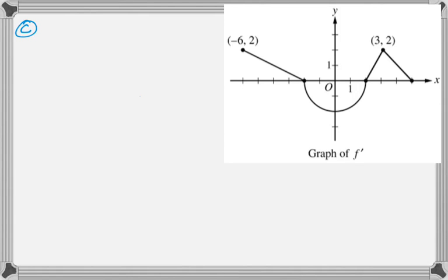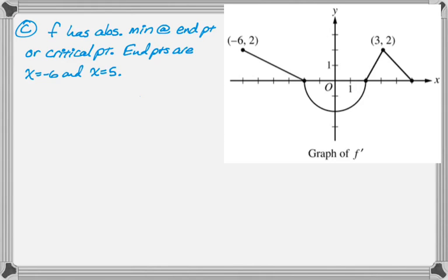This is a classic candidate's test problem. So we know that the absolute min is going to occur at either an endpoint or a critical point. The endpoints are negative 6 and 5, and we also can find the critical points. Critical points are where the derivative is either 0 or undefined. So looking at our graph, the critical points are going to be at negative 2 and 2.